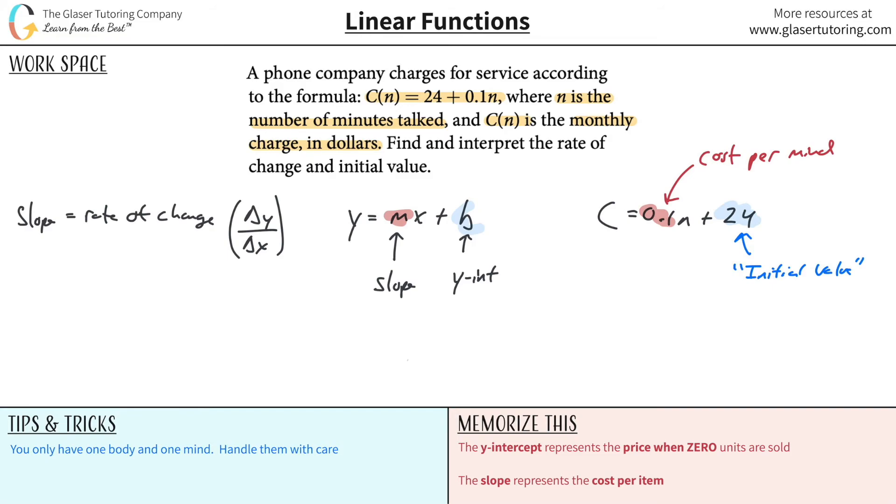So here we have the initial value is 24. And now we realize that this is also the cost when zero items are sold. Or in other words, this could be the monthly fixed charge. This is what you're paying every month regardless of if you make a call or not. And that's also called a fixed expense or a fixed charge or a fixed fee in economics parlance.